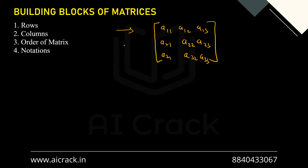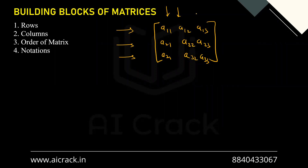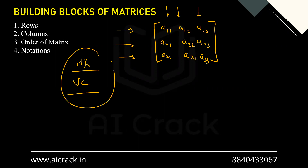The horizontal ones are called rows and the vertical ones are called columns. If you're forgetting this, you can remember HR and VC — HR means horizontal rows, VC means vertical columns. You can use these abbreviations for remembering the notations of matrices.